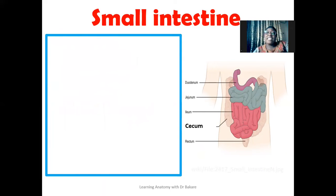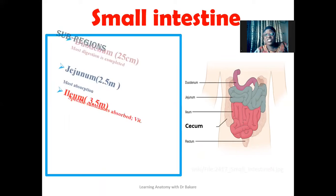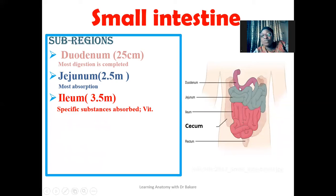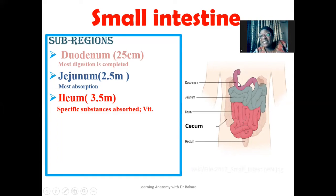The small intestine is subdivided into three regions. The first is the duodenum, which is the first region of the small intestine and is continuous with the pyloric region of the stomach — the terminal region of the stomach. The duodenum is about 25 centimeters in length, making it the shortest of the three subdivisions. Most digestion occurs in the duodenum because it is in this region that bile and pancreatic juice open into the small intestine.